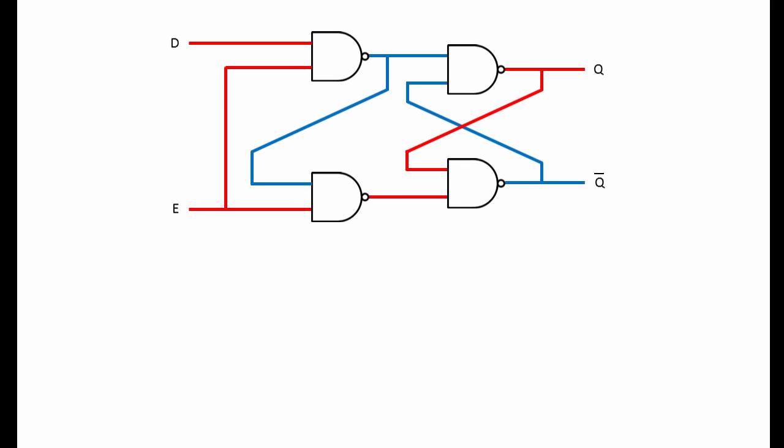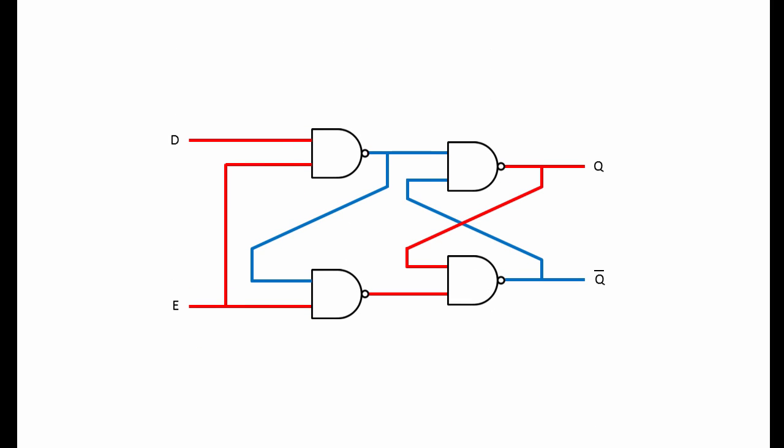Let's quickly check it is indeed doing the same thing by tracing the highs and lows through the gates again. At the moment E is high, D is high, and so is Q.